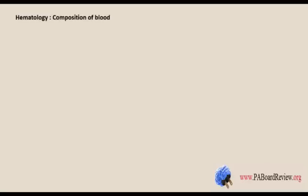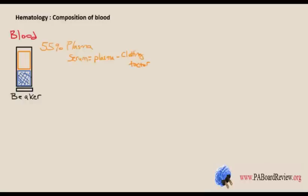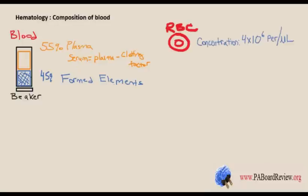So let's talk about the composition of blood. If you take a beaker of blood and spin it down, 55 percent will be plasma and 45 percent will be formed elements. Remember, serum is plasma minus the clotting factors — if you take plasma and stir it with a glass rod, the clotting factors stick to the rod and you're left with serum. Red blood cells have a concentration of four times ten to the sixth per microliter. It takes about 50 drops of blood to make one milliliter, and their lifespan is about 120 days.